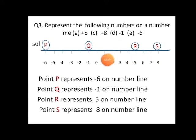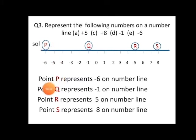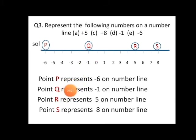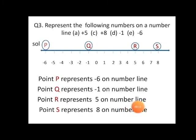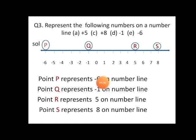Similarly, minus one is represented by letter Q to the left of zero, and minus six is represented by letter P. So point P represents minus six on the number line, point Q represents minus one, point R represents plus five, and point S represents plus eight. For positive numbers there is no need to write the plus sign, as it is already understood, but for negative numbers we must mark the negative sign in front of them.